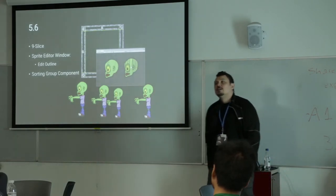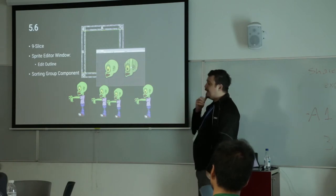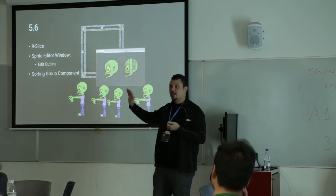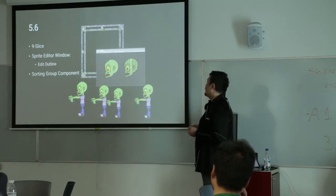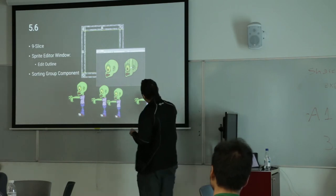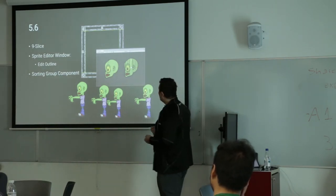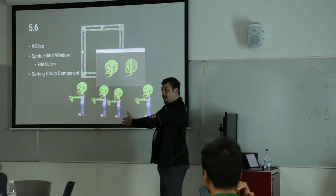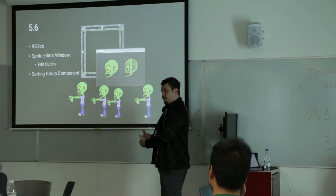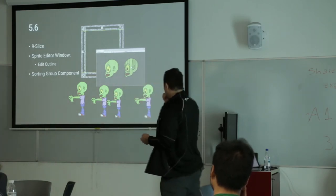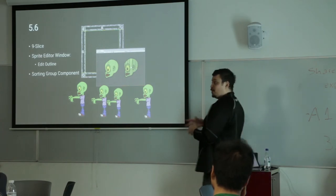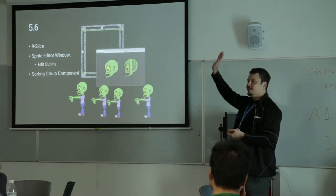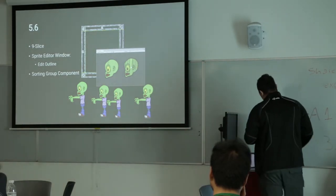We did a lot of work with sorting, so we added sorting group components. This helps you organize your sprite renderers and say, all of you sprite renderers in this one sorting group render together. A good use case in games is if you have a character made up of different segments and you want to sort those segments correctly — you can say this whole arm renders together, then the body separately, then the arm at the back on a different group. When they meet other characters, their body parts won't go through each other.